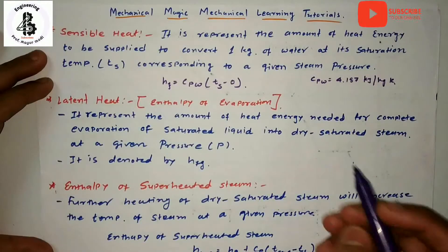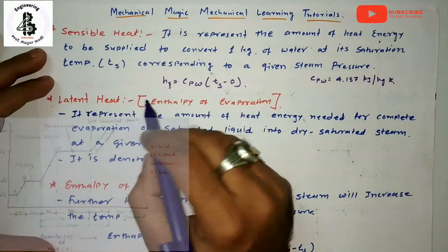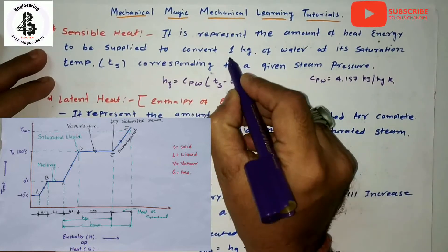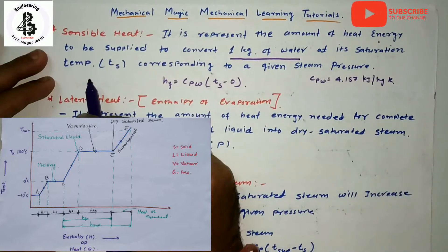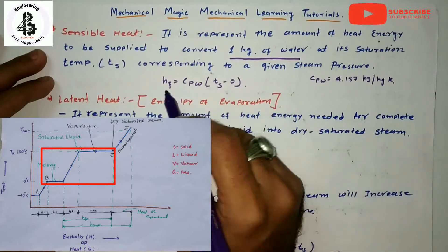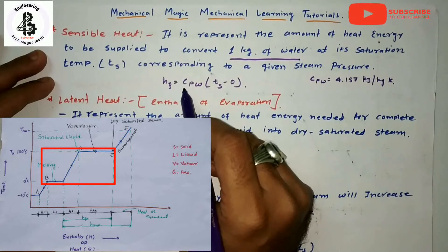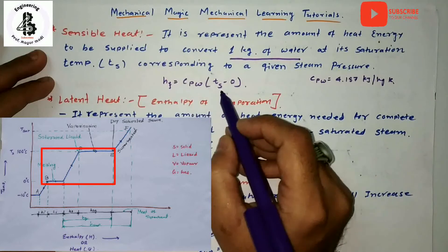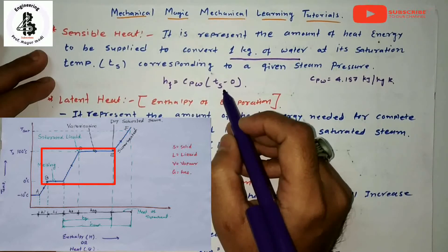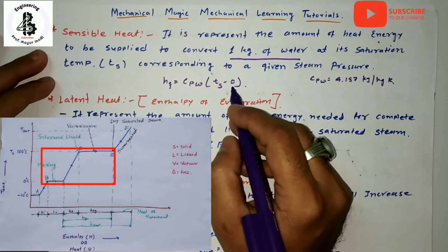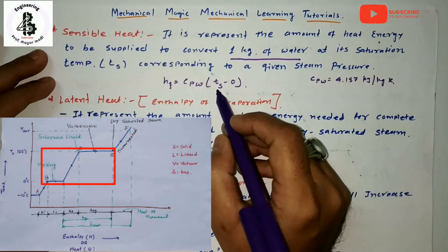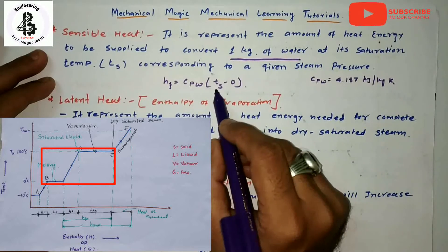Sensible heat represents the amount of heat energy to be supplied to convert one kg of water at its saturation temperature corresponding to the given steam pressure. In thermodynamics it is equal to the specific heat of water multiplied by (Ts minus zero), where Ts is the saturation temperature. This applies when generating from ice to superheated vapor — it is the temperature at which steam formation starts at constant pressure, so it equals Cp of water × (Ts − 0).